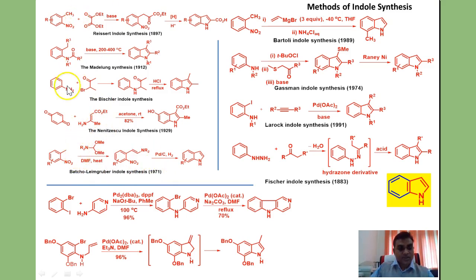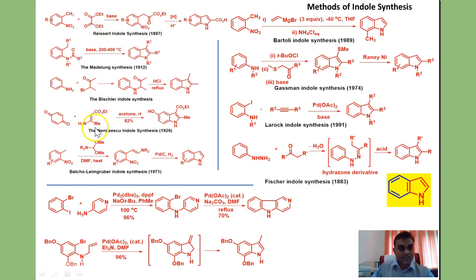In all these cases we start with an appropriately substituted benzene. In three of these methods — Reissert, Madelung, and Batcho-Leimgruber — we start with ortho-disubstituted benzene, and therefore we only need to arrange for one additional carbon atom. Diethyl oxalate and N,N-dimethylformamide acetal type substrates were utilized, which undergo condensation to form a keto-ester.